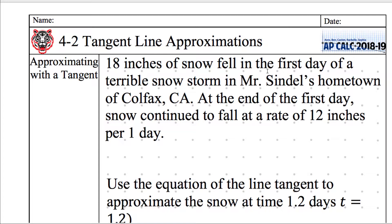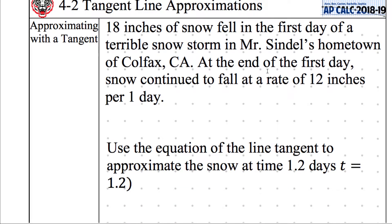18 inches of snow fell on the first day of a terrible snowstorm in Mr. Sundell's hometown of Colfax, California. At the end of the first day, snow continued to fall at a rate of 12 inches per one day. Use the equation of a line tangent to approximate the snow at time 1.2 days, T equals 1.2.